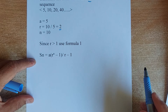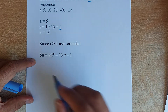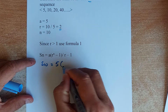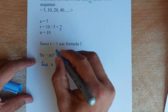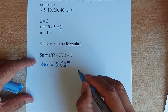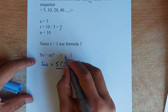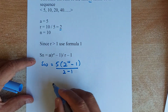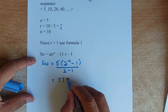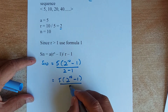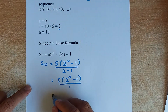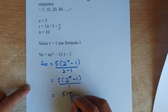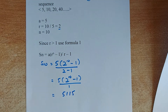S10: replace A with 5, R is 2 to the power of 10, N is 10 minus 1, divided by 2 minus 1. Simplify: 5 times (2 to the power 10 minus 1), divided by 1. Put this in your calculator, and the answer comes up to 5,115. That will give you an achieve.